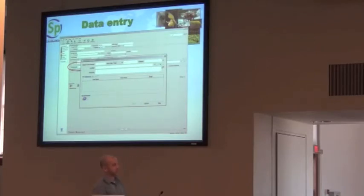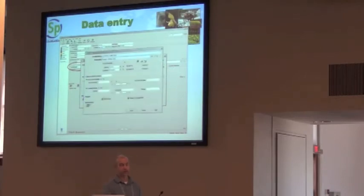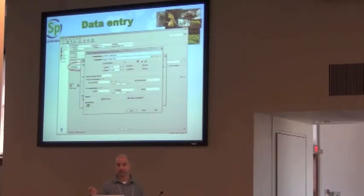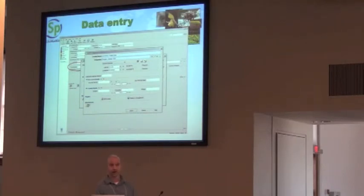The collecting event form has a field number, dates, and a bunch of collectors who collected that material, linked to a locality form with a locality string and additional information. You'll notice on the form there's a GeoLocate button, so you can interact with Nelson's GeoLocate engine directly from the locality form and georeference your material on the fly as you're entering data into the database.